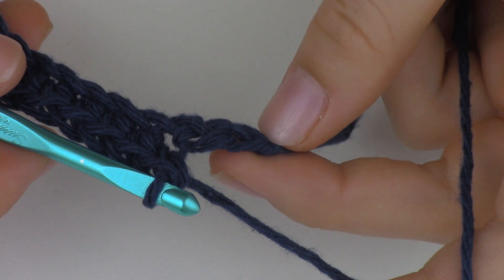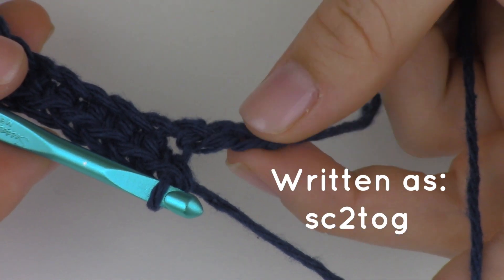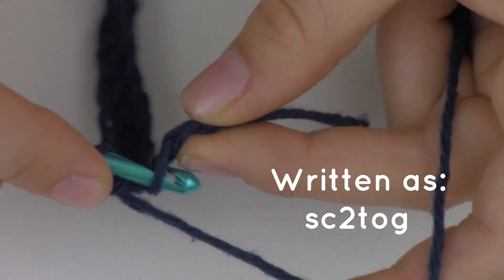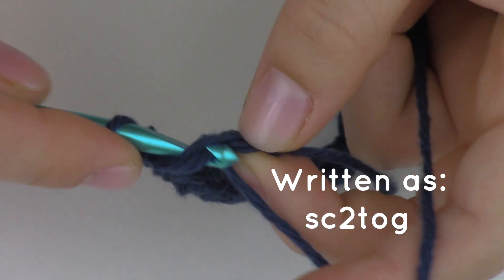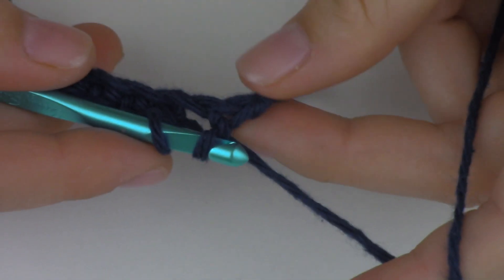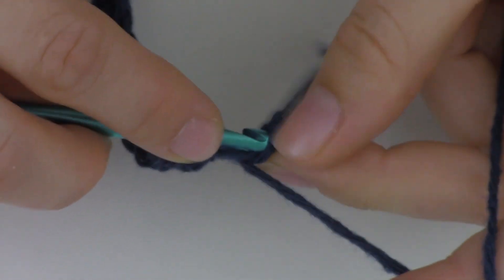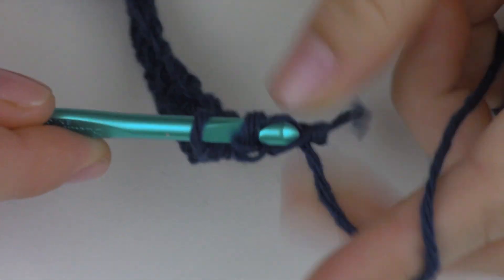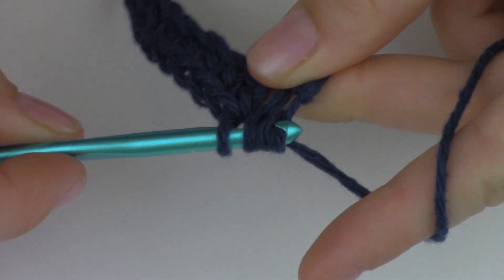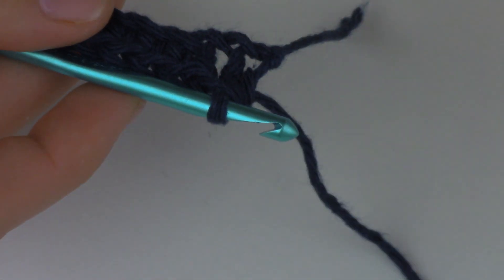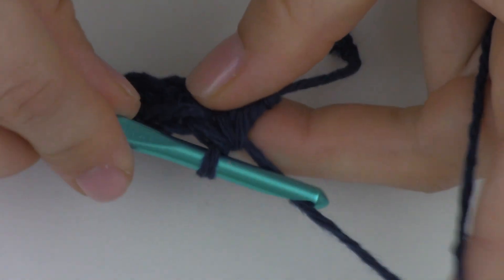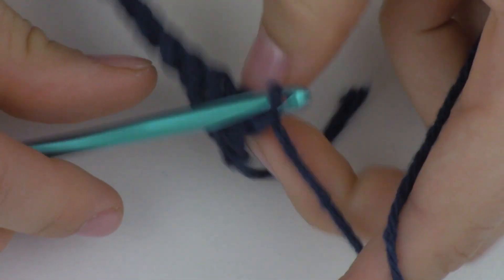Now what I'm going to do is I'm going to decrease by 1 by combining these 2 stitches. It's also known as a single crochet 2 together, and it just decreases your stitches by 1. So I'm going to insert my hook, yarn over and pull through. I have 2 loops on my hook. I'm going to insert into the next stitch, yarn over and pull through. I have 3 loops on my hook. I'm going to yarn over and pull through all 3 loops. And that decreases my stitch. Now I'm going to chain 1 and turn my work.